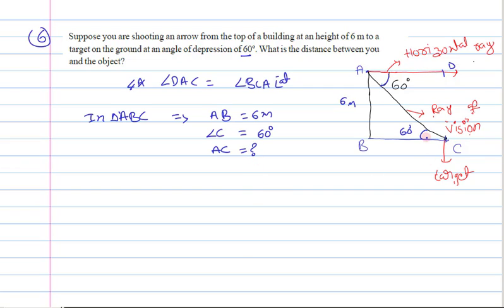With respect to the 60 degree angle, we know the opposite side and need to find the hypotenuse. So what trigonometric ratio uses opposite side and hypotenuse? That is sine.